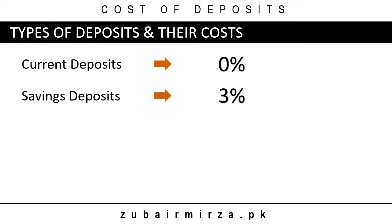Last but not the least, banks have term deposits. Unlike the first two types of funds, these are not demand deposits — they are not readily withdrawable and are therefore less liquid, with no or very few transactions. The rate of interest paid on these deposits is higher than that paid on savings deposits, and this rate varies with the period of time and interest payout conditions. To keep the scenario simple, let's treat term deposits as one single block and assume a market interest rate of 6% per annum.